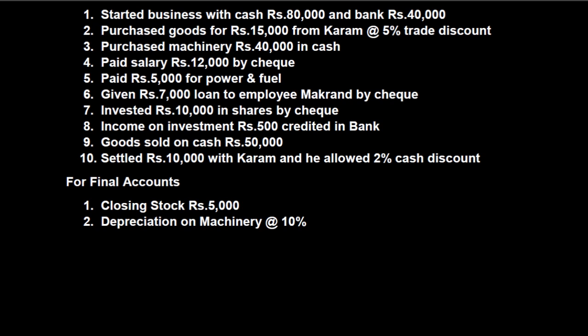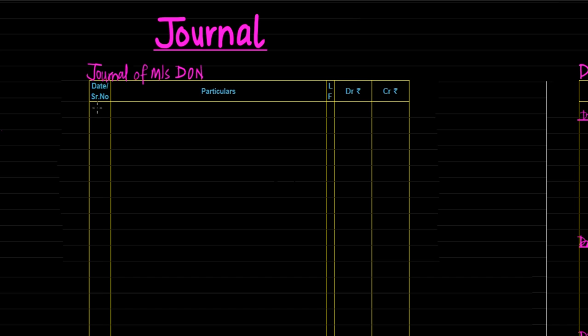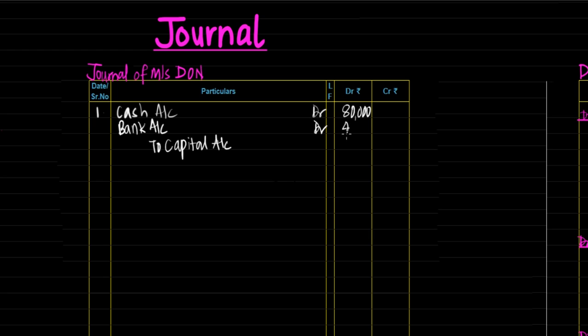First we would journalize it. First transaction: started business with cash Rs. 80,000 and bank Rs. 40,000. Cash and bank are coming into the business and capital is provided. So the first transaction would be cash account debit, bank account debit to capital account — 80,000 coming into the business, 40,000 coming into the business, and capital provided is Rs. 1,20,000 in totality.